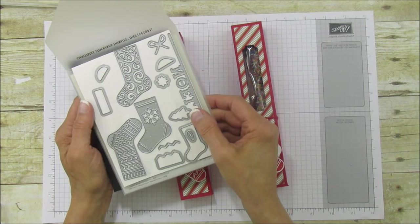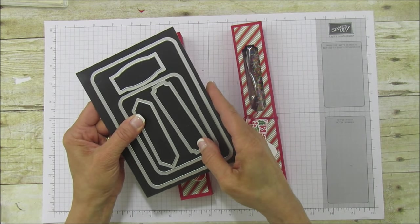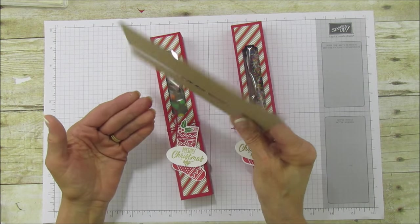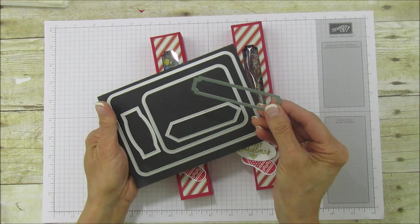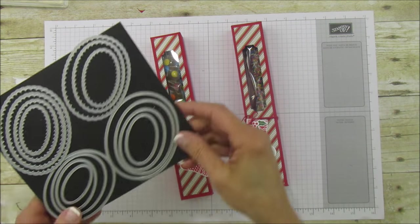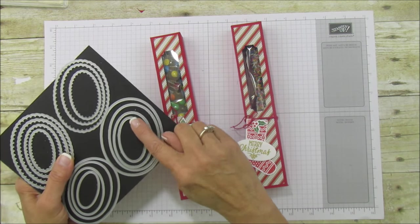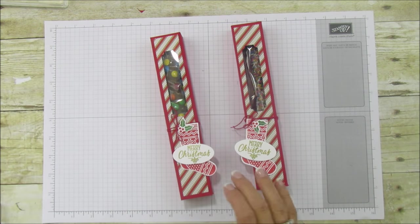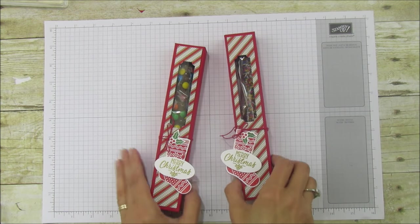Then we're going to use project life cards and labels, which is available now. I'm using this framelit here for our window. The only other thing that we're going to use is our layering ovals to cut this oval out here. If you have an oval punch that will work probably too. Alright, let's get started.